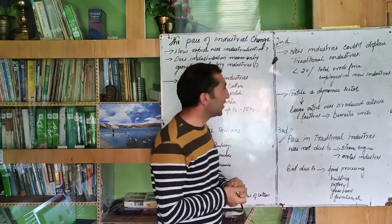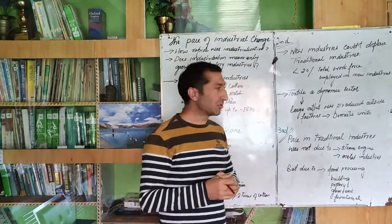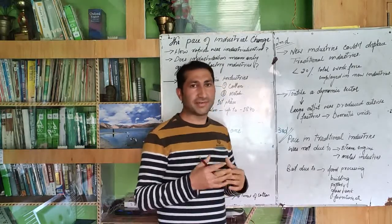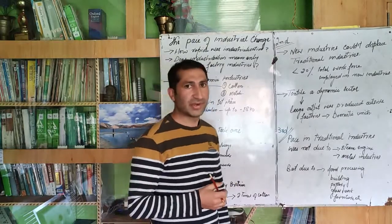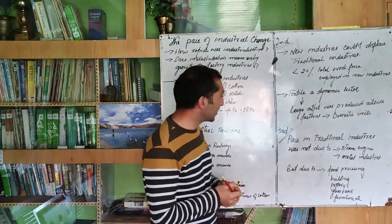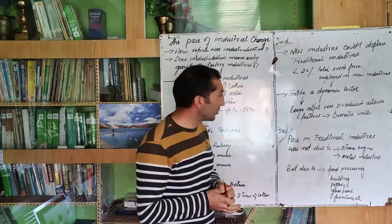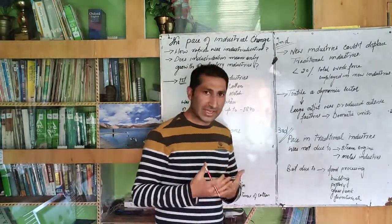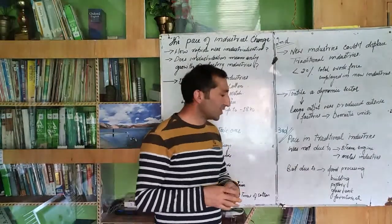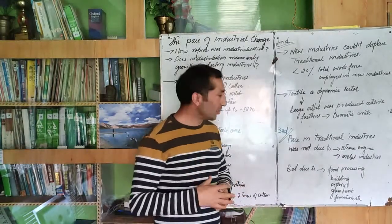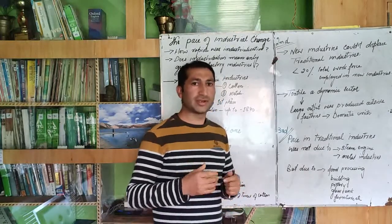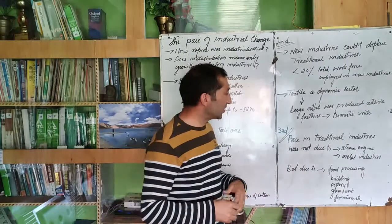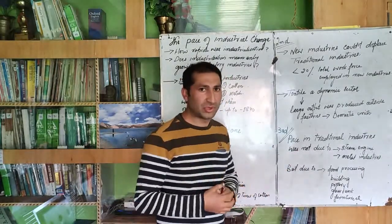Textile was a dynamic sector, but large output was produced outside the factories in domestic units and traditional production settings. Other traditional industries like food processing units, construction, pottery, glasswork, and furniture also remained leading and flourished.